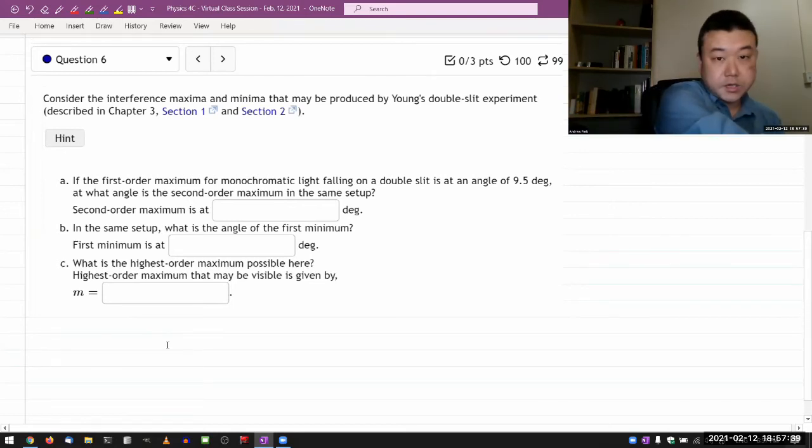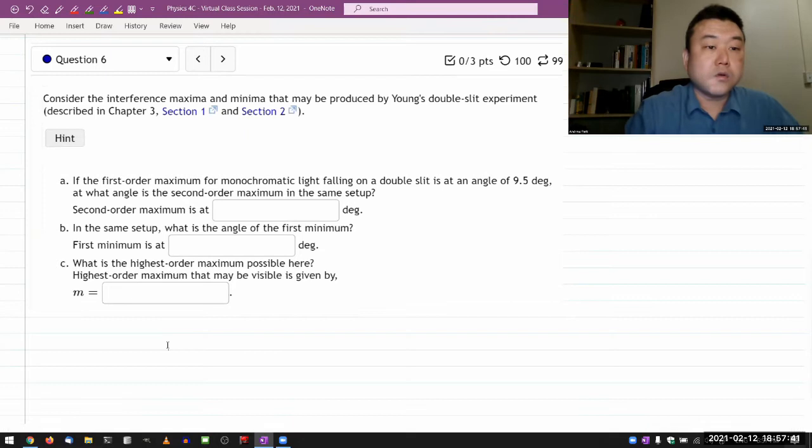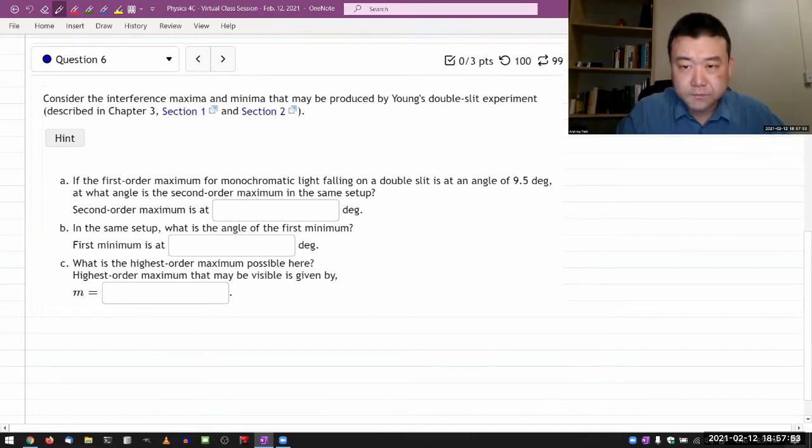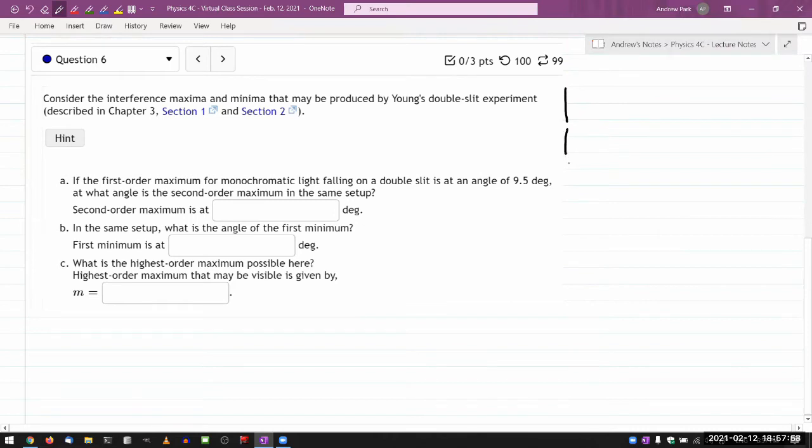So this is the question. It says, consider the interference maxima and minima that may be produced by Young's double slit experiment. Let me just draw a picture of the setup just so that I have a place to label things as the need may arise. So double slit, screen, some separation D, and this light that's shining from here is producing some kind of double slit interference pattern.